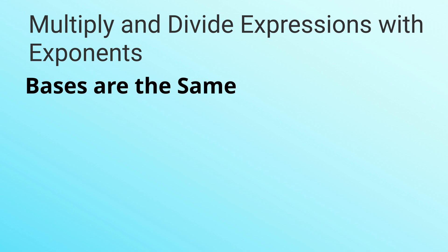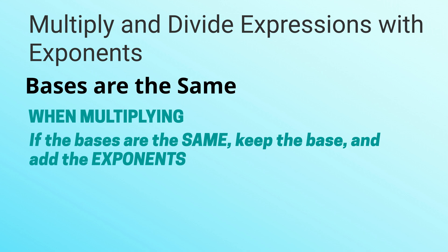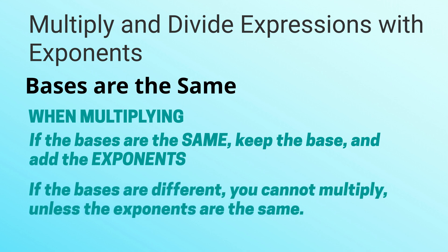The rules are as follows. If you're multiplying and the bases are the same, then you keep the base and add the exponents. If the bases are different, you can't multiply unless the exponents are the same, and in that case you multiply the bases and keep the exponents.